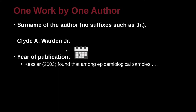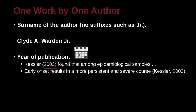Year of publication is the next key point to remember. Here's Kessler — this is the author's family name, and here is the year of publication. 'Kessler found that among epidemiological samples something. Early onset results in a more persistent and severe course (Kessler, 2003).' These are two ways to write this: one where the parentheses contain just the date, and another where parentheses contain both the name and the date. Both are possible.